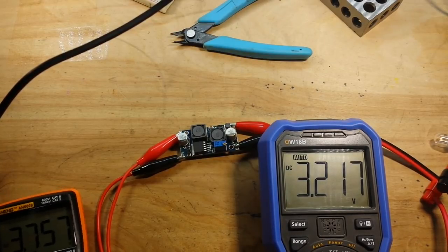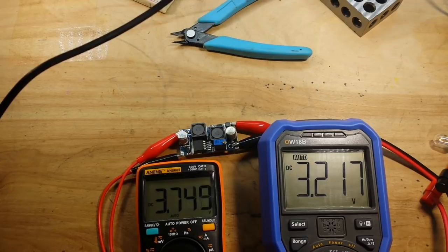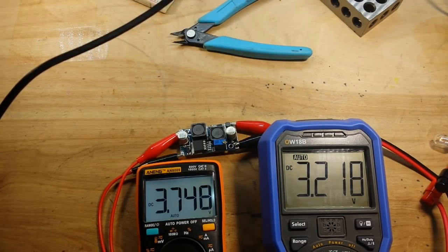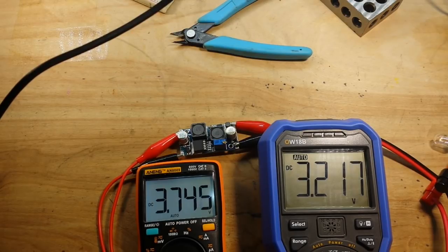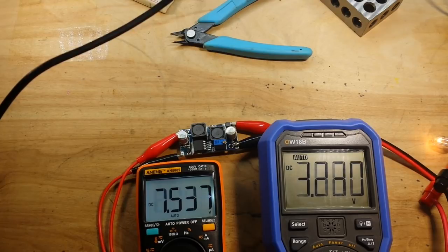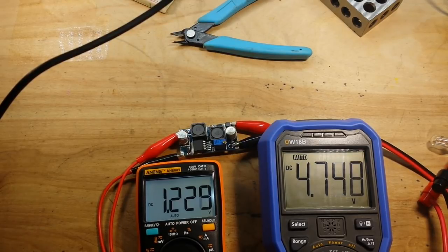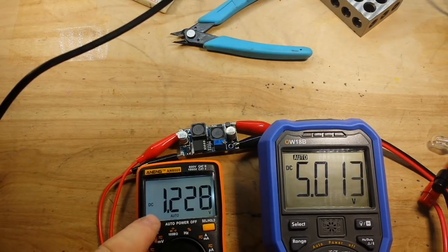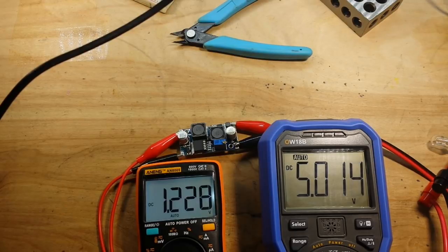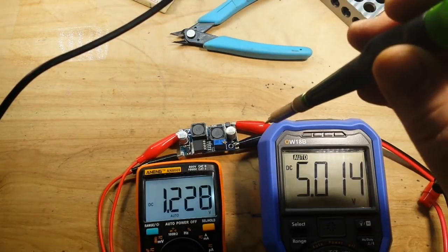That's our out, we're at 3.7 volts. Now if I turn up our input voltage, watch the blue meter. Take it up to say 5 volts here. We've gone down to 1.22 volts, so it was in the boost mode.